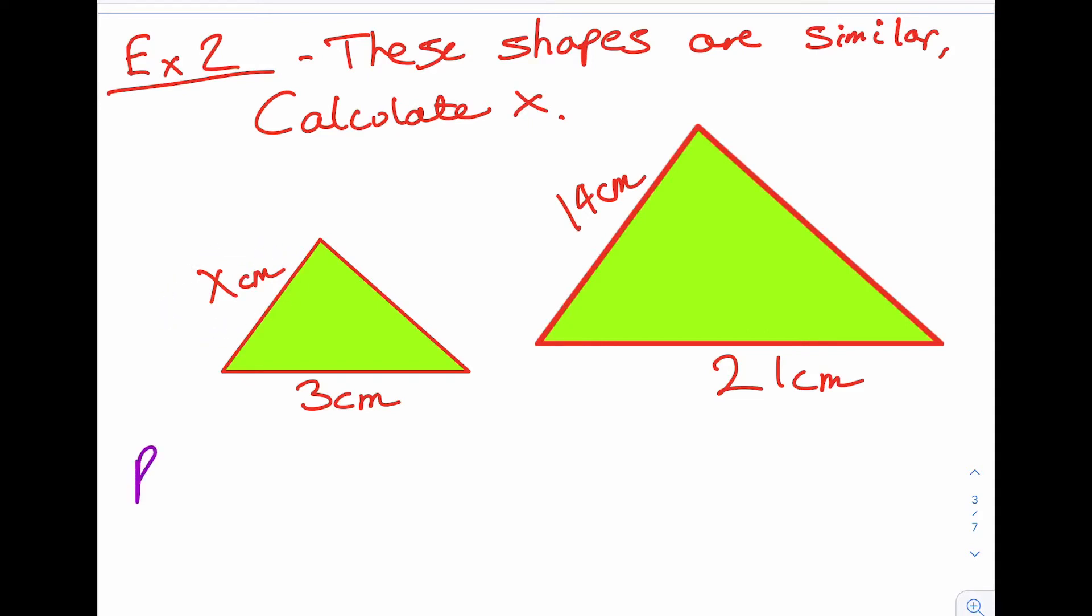instead of an enlargement scale factor, a reduction scale factor. That just means I do the small side over the big side. So in this case, 3 over 21, which I can simplify to 1/7. So our scale factor is a 7th.